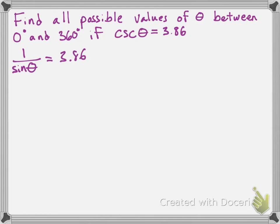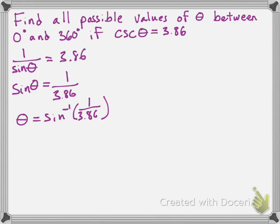Now we have this in terms of sine, but we want sine isolated. We can take the reciprocal of both sides of the equation, so sine of theta equals 1 over 3.86. Since we have sine of theta by itself, we can use sine inverse: theta equals sine inverse of 1 over 3.86. Remember, this gives us a related acute angle, not necessarily the final value of theta. The sine inverse of 1 over 3.86 gives us 15 degrees.